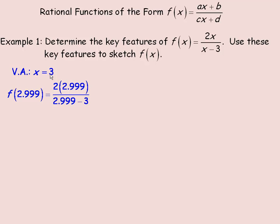To determine the behavior close to 3, I'll take a number a little bit below 3 — very close to 3 — and then one slightly above. So 2.99 is to the left of 3, and we're investigating how the function behaves as x approaches 3 from the left side. If we put 2.999 in and evaluate it, we get negative 5,998. So as x approaches 3 from below, the y value becomes an extremely large negative value — y is tending towards negative infinity. As you approach 3 from the left side, the graph is going down really, really steeply.